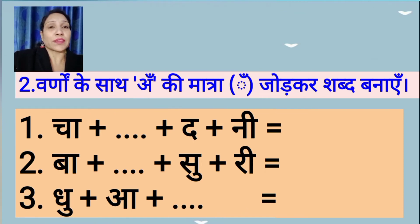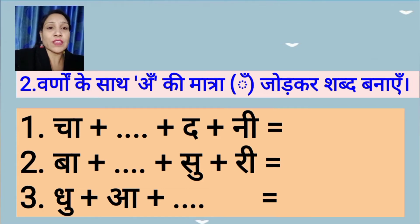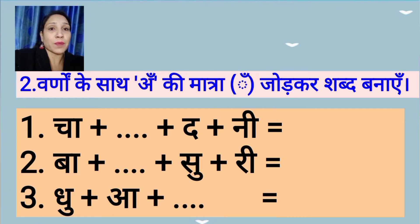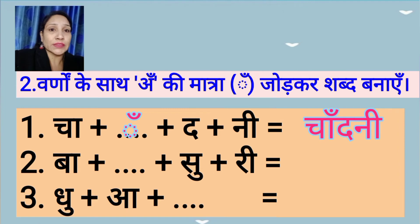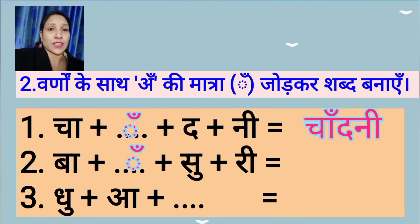Now our second question: Varno ke saath 'un ki matra' jodo aur shabd banao. In this question, you have to add 'un ki matra' to the given letters to make words. The first one is 'cha-da-ni' — add un ki matra to get 'chandani'.